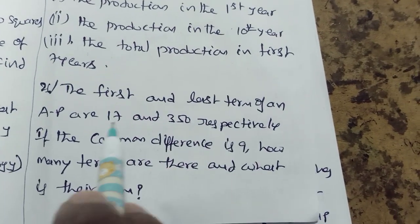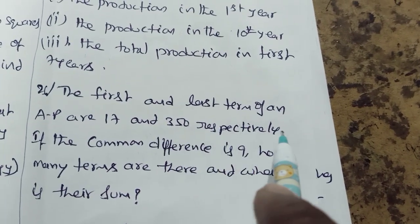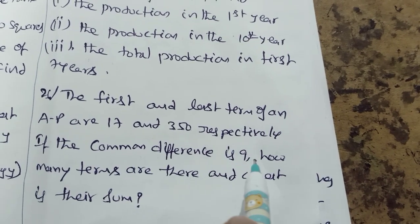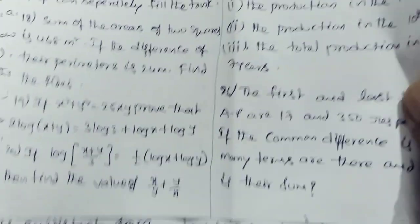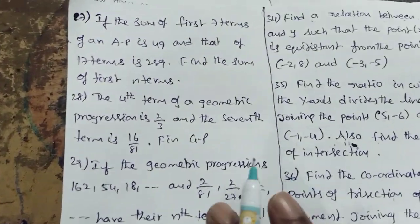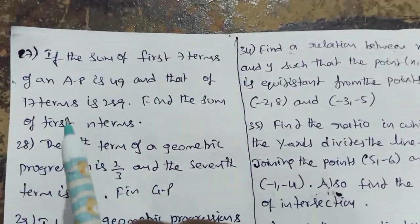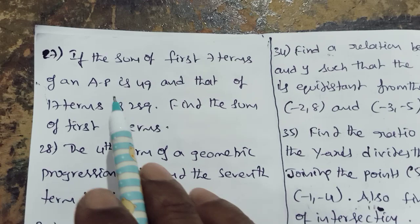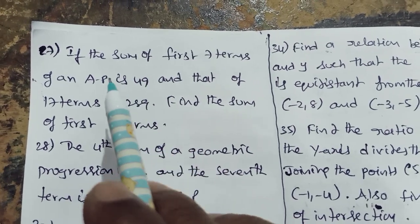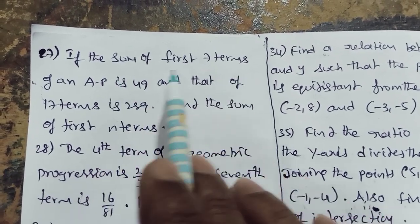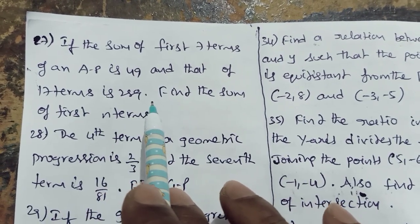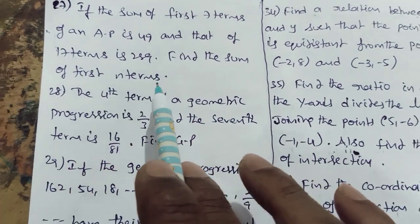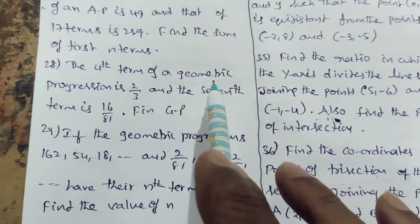The first and last terms of an AP are 17 and 350 respectively. Common difference is 9. How many terms are there and what is their sum? If the sum of first 7 terms of an AP is 49 and that of 17 terms is 289, find the sum of first n terms.